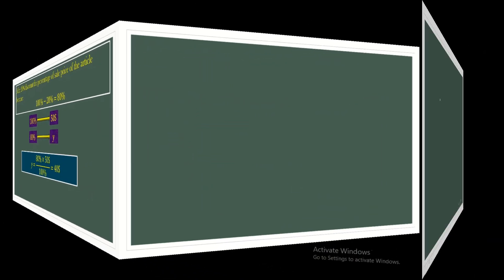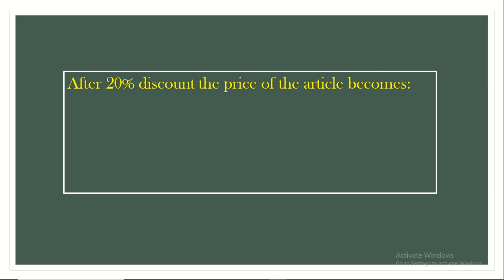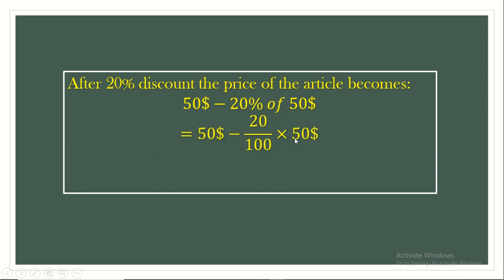Another method: after a 20% discount, the price becomes $50 minus 20% of $50. That's $50 minus 20 over 100 times $50. 20 over 100 times $50 gives us $10. So it's $50 minus $10, which gives us $40. Both methods give the same answer, so both are correct.